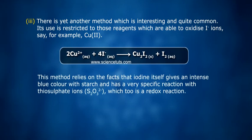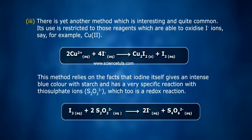2Cu2+ plus 4I- gives Cu2I2 plus I2. This method relies on the facts that iodine itself gives an intense blue color with starch and has a very specific reaction with thiosulfate ions S2O3 2-, which too is a redox reaction.